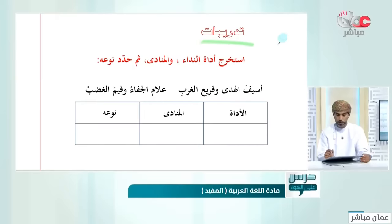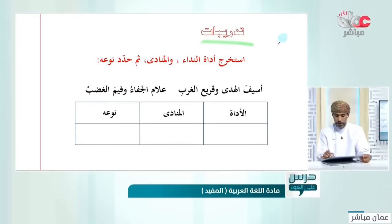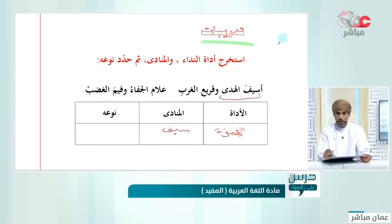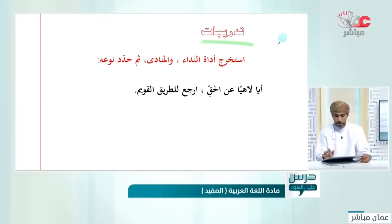أسيف الهدى وقريع الغرب علام الجفاء وفيم الغضب؟ الأداة الهمزة، والمنادى 'سيف الهدى'. انظروا 'سيف الهدى' تركيب إضافي، إذن نوعه مضاف.